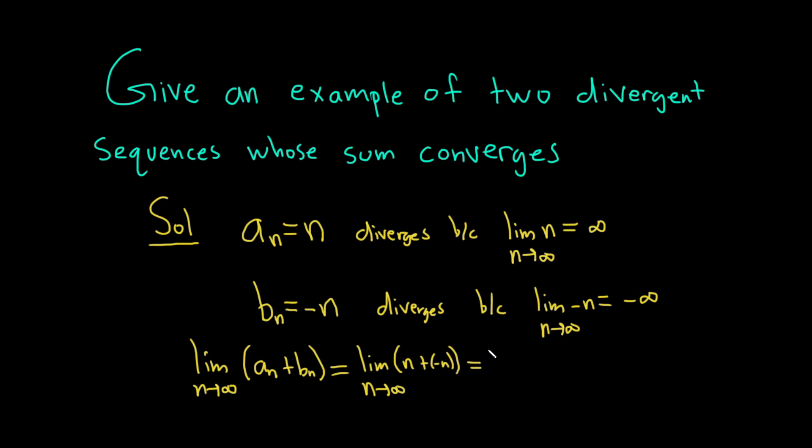This is the limit as n approaches infinity. In this case, you just have 0. So as n approaches infinity, 0 is just 0, which equals 0.